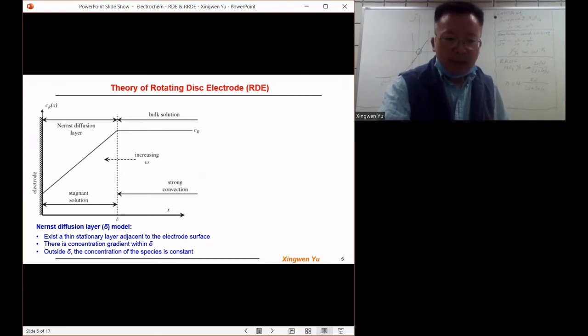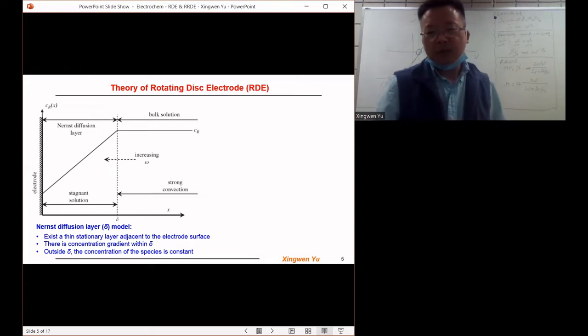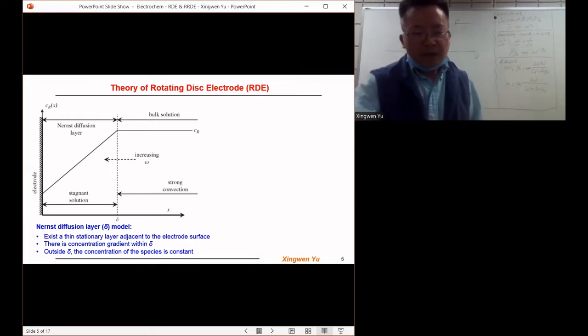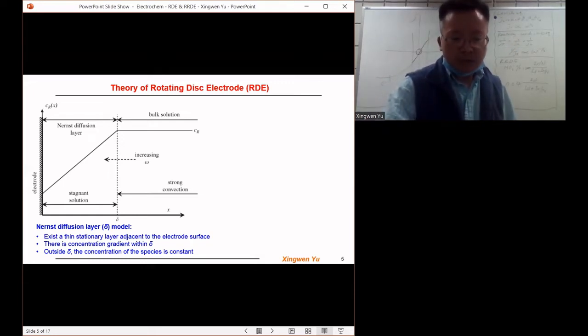There exists a thin stationary layer adjacent to the electrode surface. Within this thin diffused layer, there is a concentration gradient of the reactant species. Outside of this diffused layer, the concentration of the reactant species is constant. We use delta to represent the Nernst diffusion layer.